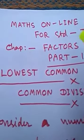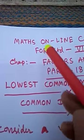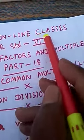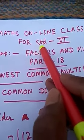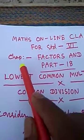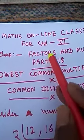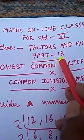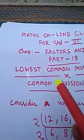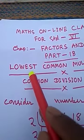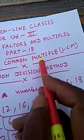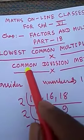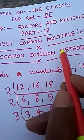Hello, good morning everyone. This is a maths online class for standard six, chapter name: Factors and Multiples. It is part 18. Here we shall learn about Lowest Common Multiples, meaning LCM, by the common division method.